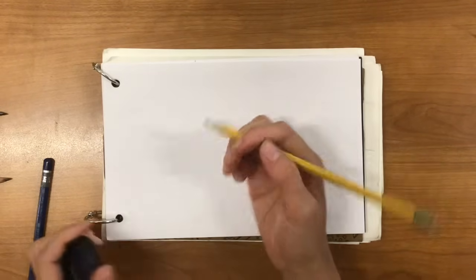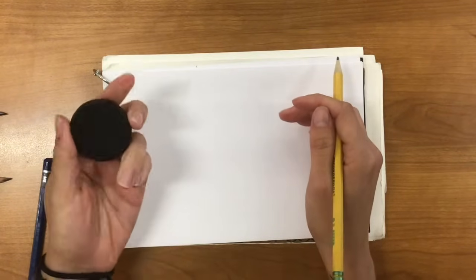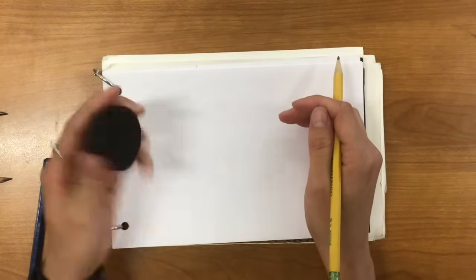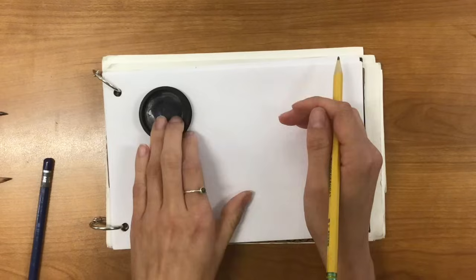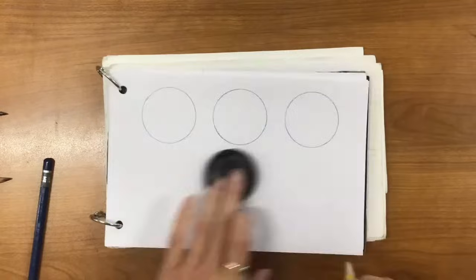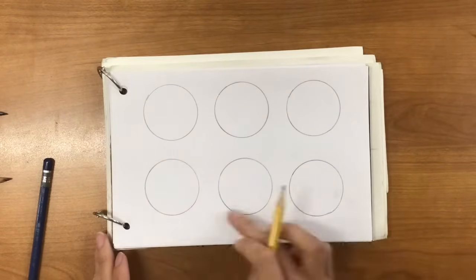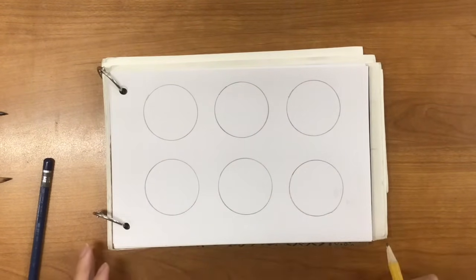First, you'll just use your number two pencil, and you can grab really any lid off like a bottle cap or anything circular that you have, or you can just freehand your circles. I'm going to go ahead and trace them. And then go ahead and label each one with those six different names that I just mentioned.